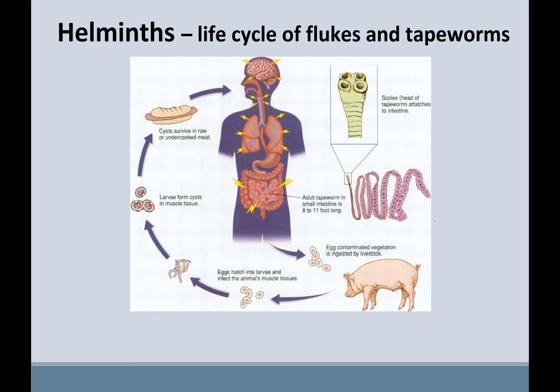Helminths have unique life cycles — this is not for you to memorize, just to appreciate how some of these are pathogens. This is a tapeworm, showing the suckers that attach to your intestine. Tapeworms basically absorb nutrients from their host, and you get it by eating contaminated meat. The larval stage is ingested and the tapeworm grows. Most worms are not reproducing in the human host, but they produce eggs that leave through the fecal route back into the environment.